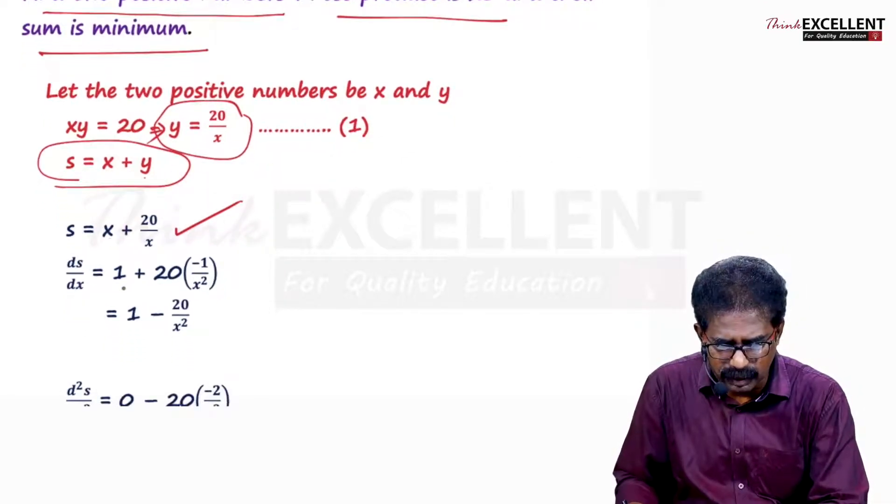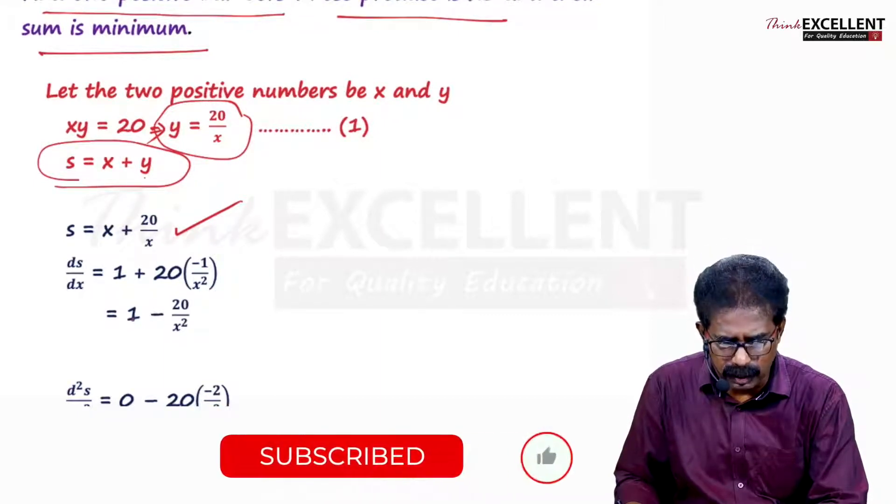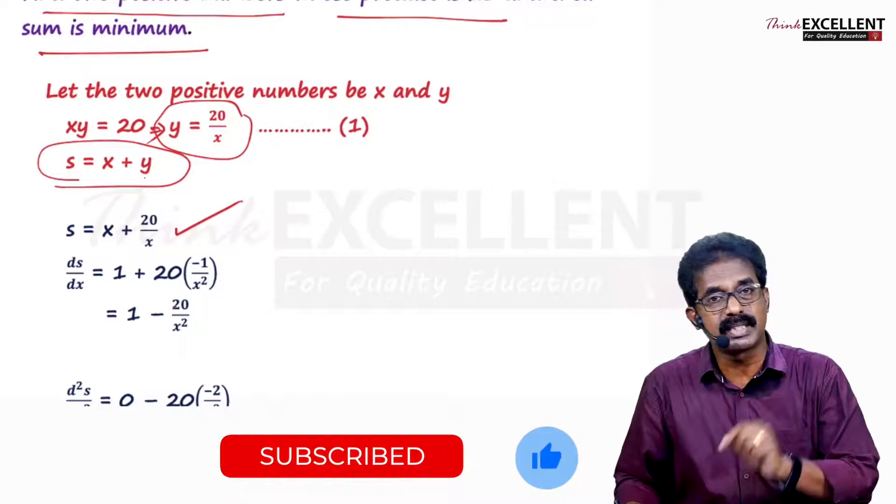ds by dx: x derivative is 1. 20 is a constant. 1 by x derivative is minus 1 by x square. So 1 minus 20 by x square. This is first derivative.